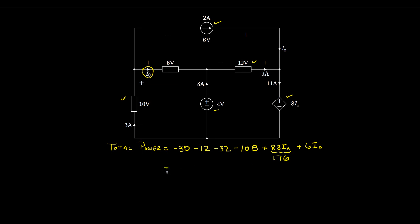So the total power is negative 30 minus 12 minus 32 minus 108 plus 176, which sums to negative 6. Adding the term with the unknown current gives negative 6 plus 6·I0. By conservation of power, that must equal zero, so we find that the unknown current I0 is equal to 1 amp.